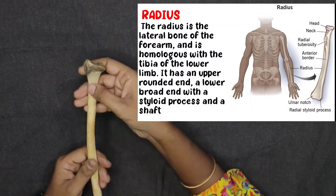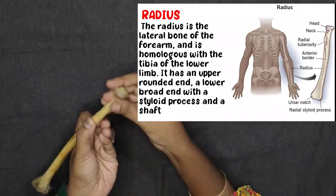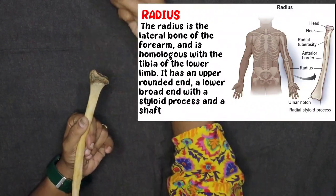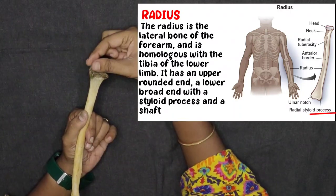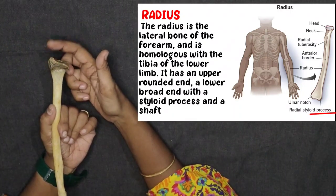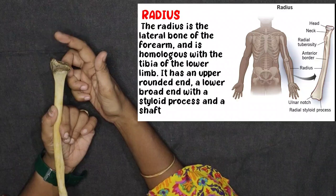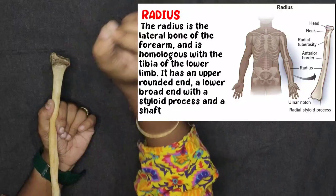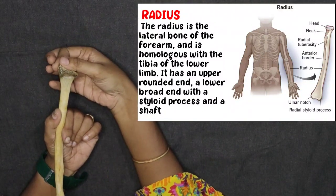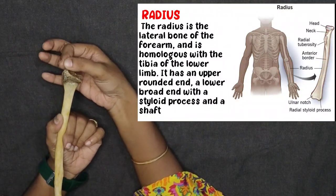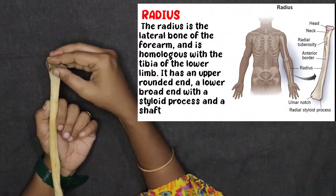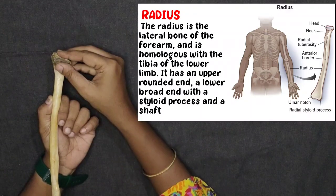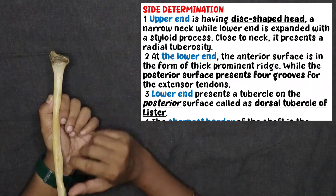The radius has three parts: the upper end, the lower end, and the shaft. At the lower end, there is an extra projection called the styloid process. Anything extending beyond the boundary of a bone as an extra projection is called a process.